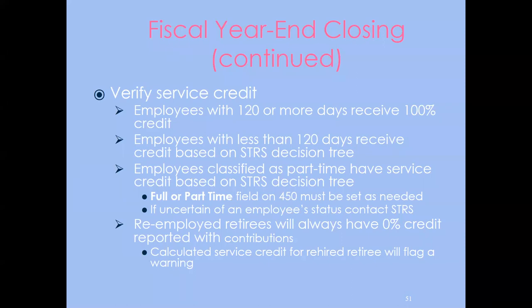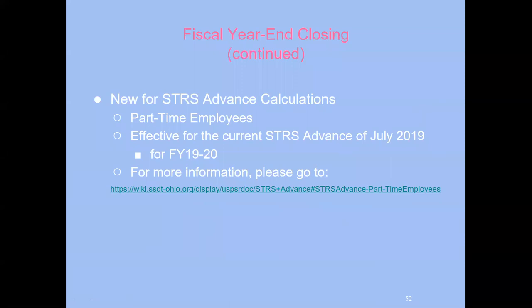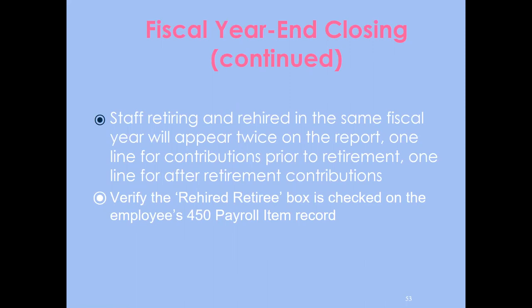A reminder: re-employed retirees will always show with zero percent credit on the report with contributions. For part-time employees, the service decision tree applies — make sure the full/part-time field on the 450 record is set correctly. If your district is uncertain about an employee's status, they can contact STIRS directly. For staff rehired in the same fiscal year, they'll appear twice on the report — once for contributions before retirement and once after — and make sure the 'rehired retiree' box is checked on the employee's 450 payroll item record.